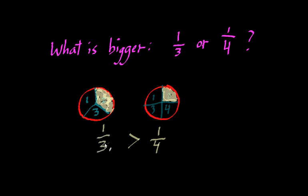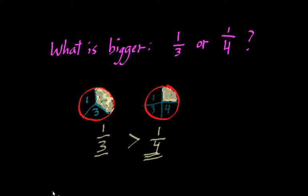Equivalently, one-third is greater than one-fourth. Remember, the open part of the greater-than sign — the mouth — always faces the bigger quantity. You might be saying: how can one-third be bigger than one-fourth? There's a three here and a four there — isn't four bigger than three? Well, one-third means you're taking one piece out of three equal-sized pieces, and those three pieces will be bigger on average than if you divided the same circle into four equal-sized pieces.